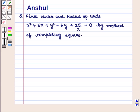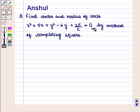Hello and welcome to the session. In this session we are going to discuss the following question: Find the center and radius of the circle given by the equation x² + 5x + y² - 6y + 25/2 = 0 by the method of completing the square.